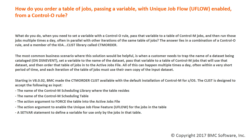The most common business scenario where this solution would be helpful is when a customer needs to trap the name of a data set being cataloged on a DSN event rule, set a variable to the name of that data set, pass that variable to a table of Control-M jobs that will use that data set, and then order that table of jobs into the active jobs file. All of this can happen multiple times a day, often within a very short period of time, and each iteration of the table of jobs must use their own copy of the input data set.